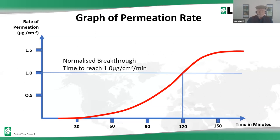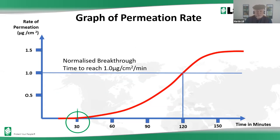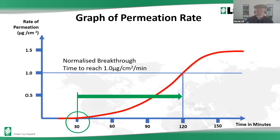Most people say the breakthrough is 120 minutes, so they're safe for 120 minutes. But look — the first breakthrough, the point where the chemical first started permeating through the fabric, was identified at 30 minutes. So between that 30-minute point and the 120-minute breakthrough, the chemical has already been permeating through the fabric at an increasing speed. That area below the curve represents the volume per centimeter squared of chemical that has already permeated at the breakthrough of 120 minutes.